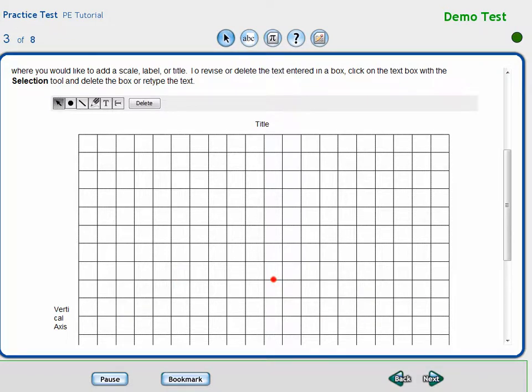In some situations, plotting points is the correct method to display the information in the problem. However, in some situations, the correct way to display information is with some form of a line. This tutorial will now review creating line segments, rays, and lines.